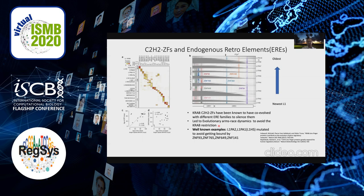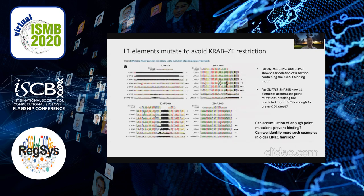Some of the best-known examples are retroelements L1PA1 and L1PA2 — among the youngest LINE elements — and how they mutated to avoid being bound by ZNF93 and ZNF765. As shown here from Trono's paper, the young LINE elements L1HS and L1PA2 actually developed deletions inside them which prevented them from getting bound by ZNF93, occurring exactly where the ZNF93 motif is.